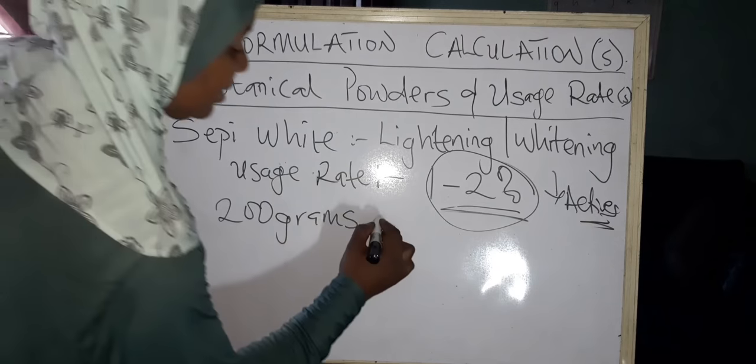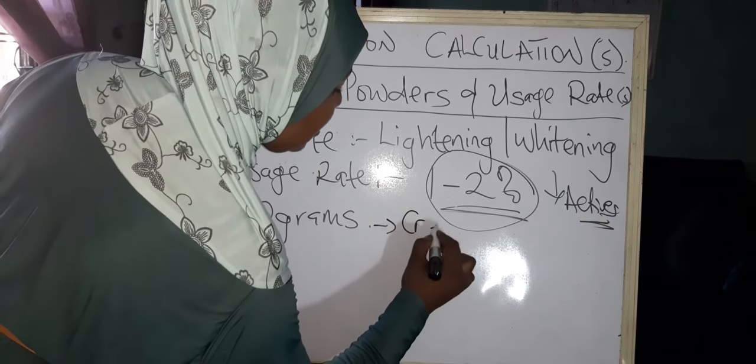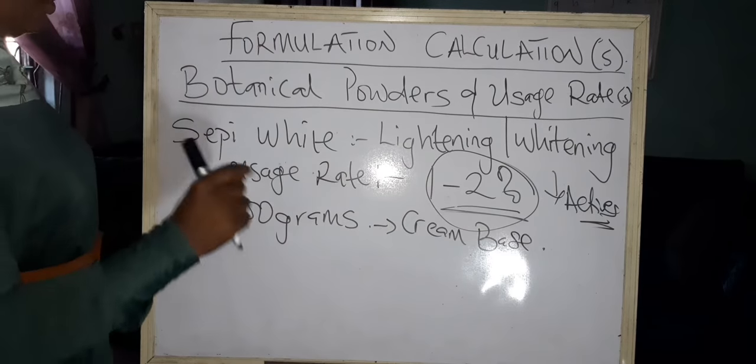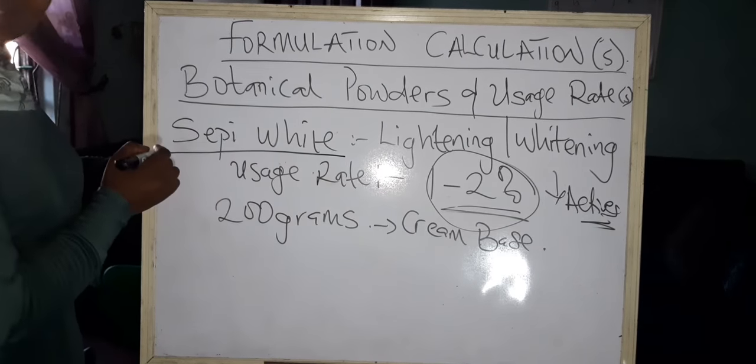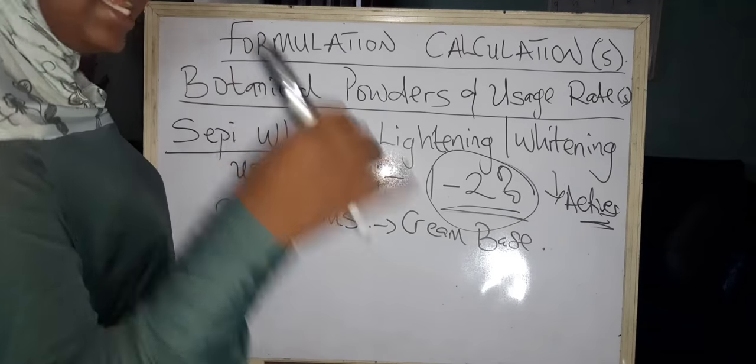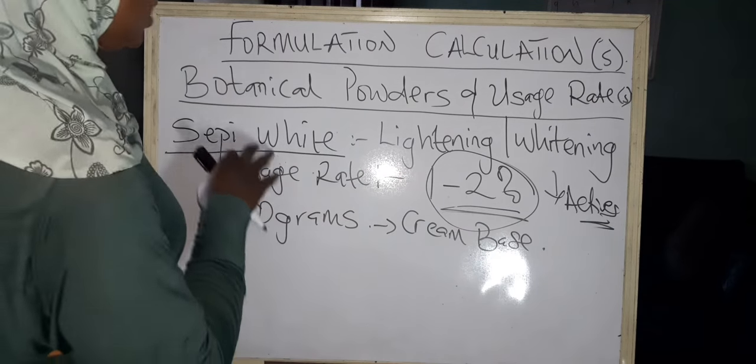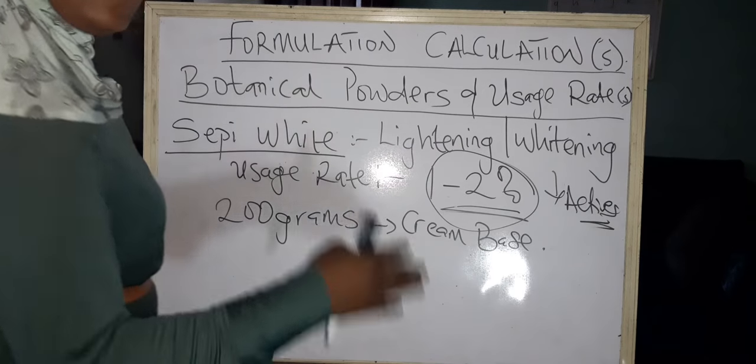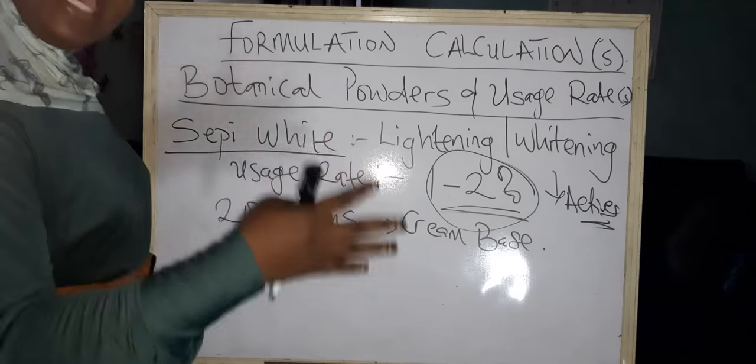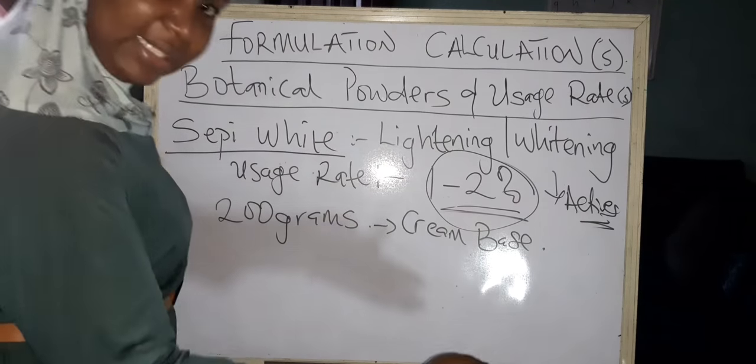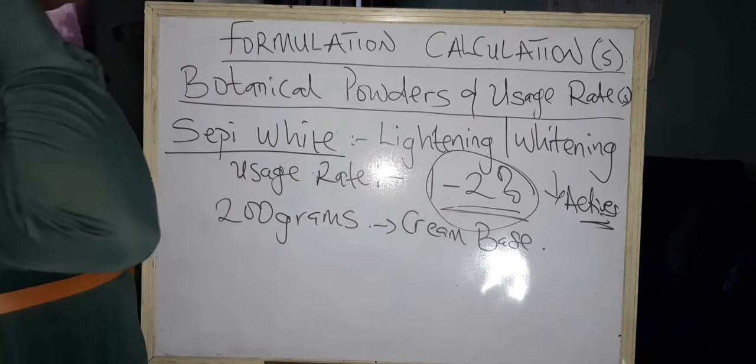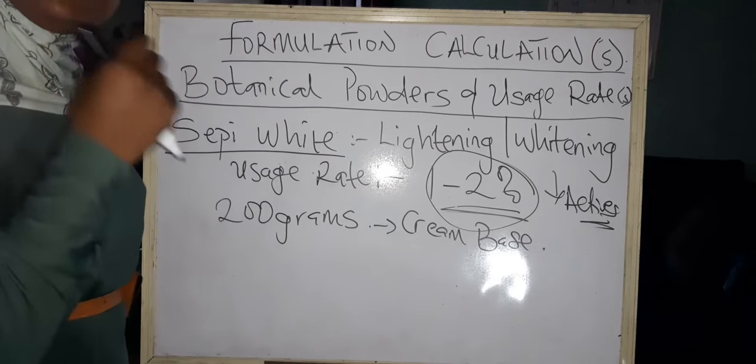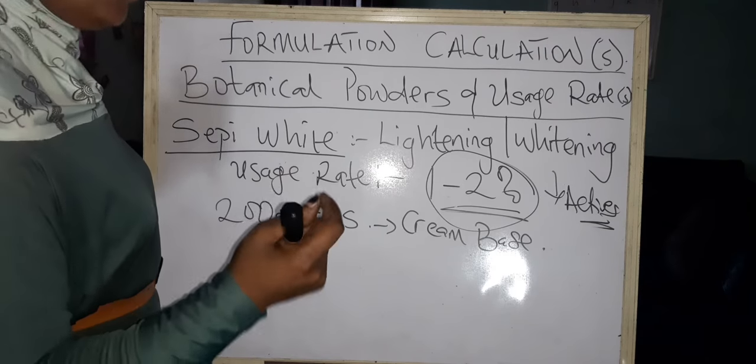This is your cream base after all the mixture. That's why I always ask you to add your active last. Apart from adding it last, you're going to first check the pH because most of these botanical powders not only have usage rates, they also have pH levels where they function better. When you carry something like kojic acid that is acidic and put it in an extreme alkaline situation, it might not work the way you want.